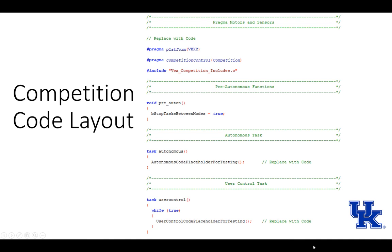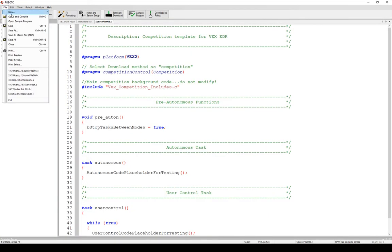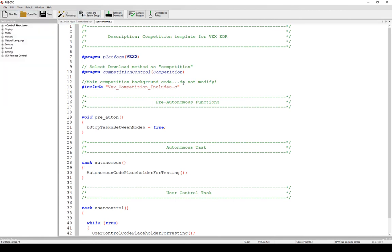If I go into my competition template in Robot C, I'm going to go file, new, and pull out a competition template. It's going to open up and there's going to be a lot of comments in it.